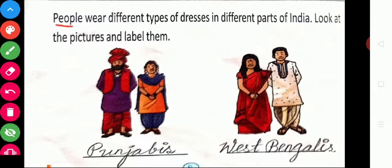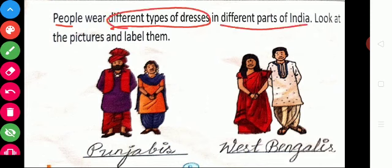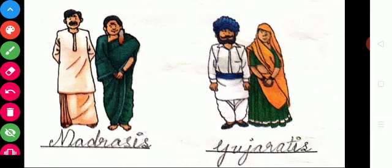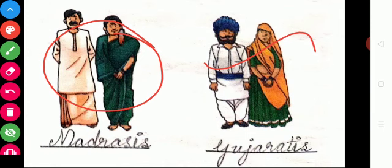People wear different types of dresses in different parts of India. Punjabis wear this type of dress. West Bengalis wear these types of dresses. Madrasis wear these types of dresses. Gujaratis wear these types of dresses.